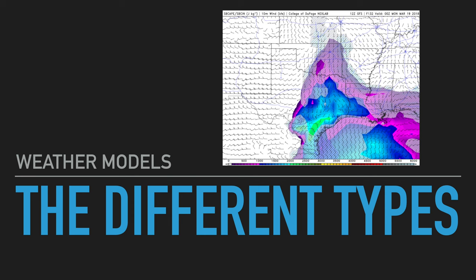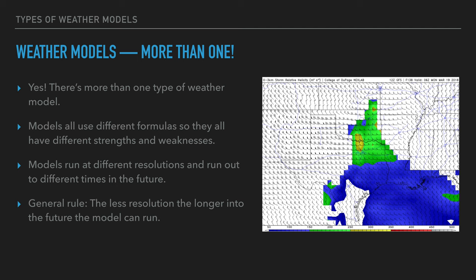There is more than one type of weather model. Models all use different formulas and have different strengths and weaknesses. Some models do better with severe weather, some with the tropics, some with winter weather. Models also run at different resolutions and they run out to different times in the future — not all models are made the same.